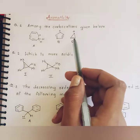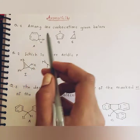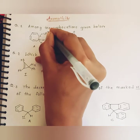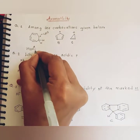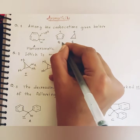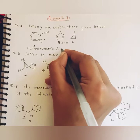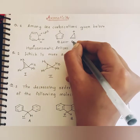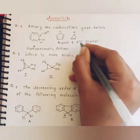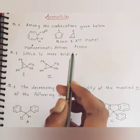First question: among the carbocations given below, you have to tell whether each is aromatic, homo aromatic, non-aromatic, or anti-aromatic. In the first case, there are six pi electrons; it is cyclic and conjugated, but the conjugation is broken by the presence of an sp3 hybridized carbon atom — therefore it is homo aromatic. In the second case, there are four pi electrons; it obeys the 4n pi electron rule, is cyclic, planar, and conjugated — therefore it is anti-aromatic. In the third case, there are only two pi electrons; it obeys Hückel's rule — therefore it is an aromatic compound.